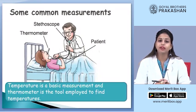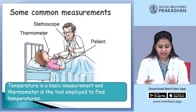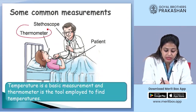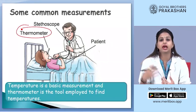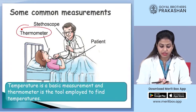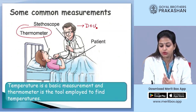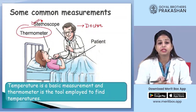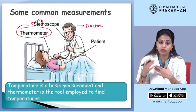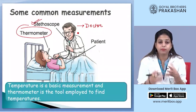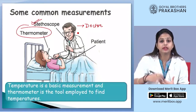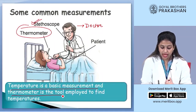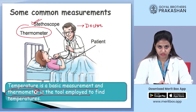In the picture, you can see a patient — a girl who may be suffering from fever because she has a thermometer in her mouth. Whenever we get a fever, our parents check our temperature using a thermometer. Even a doctor carries a stethoscope, which is also a measuring device — it measures your heartbeat and tells whether your heart rate is normal, low, or high. When a patient gets fever, their body temperature rises, and a thermometer is used to measure that. So temperature is a basic measurement and we use a thermometer to measure it.